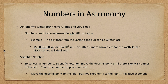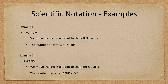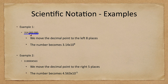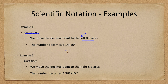Let's look at a couple of examples — a relatively large number and a relatively small number. Here we have the number 314 million. The decimal point, even though it isn't printed, would be at the end. We move the decimal point eight places to the left. Because it's left, the exponent will be positive. So it becomes 3.14 times 10 to the eighth power, and that represents all of those zeros we have gotten rid of.